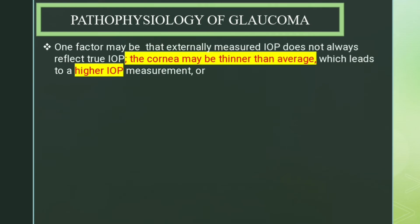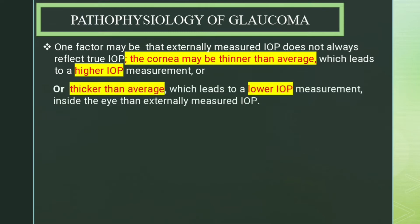The externally measured intraocular pressure does not always reflect the true intraocular pressure. If the cornea is thinner than average, this will lead to a higher IOP measurement than the actual pressure. If the cornea is thicker than average, this will lead to a lower IOP measurement than the actual intraocular pressure inside the eye.